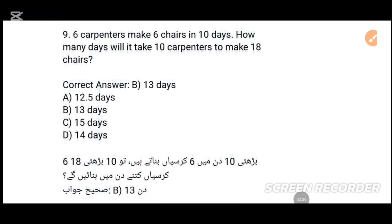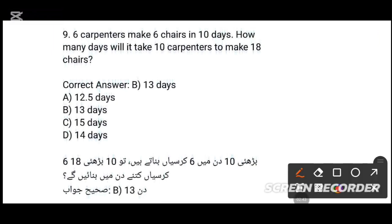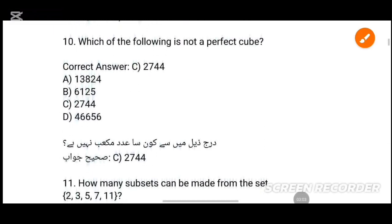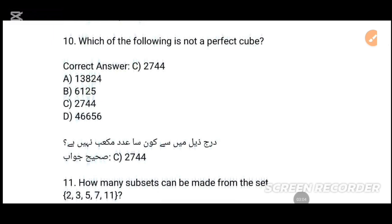MCQs number 9: Six carpenters make six chairs in ten days. How many days will it take ten carpenters to make 18 chairs? The answer is approximately 13-point-something. MCQs number 10: Which of the following is not a perfect square? Identify the perfect square — tick the correct option.